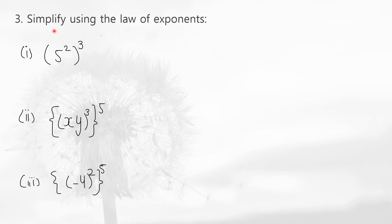Moving to the next question: simplify using the law of exponents. For 5 to the power 2, to the power 3 — there are two powers, so we apply the law of power of power. You write the base once and multiply the powers: 2 multiplied by 3 is 6. So the answer is 5 to the power 6.